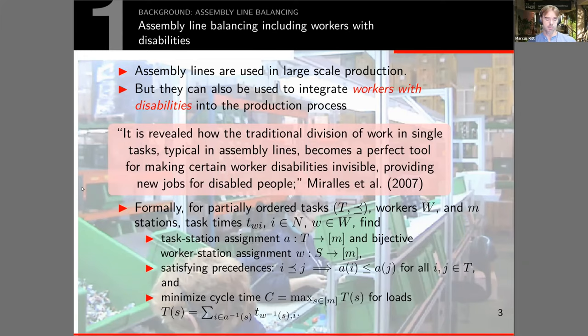There may be an order the task has to be executed given by the partial order, and we want also to assign all the workers to the stations. This assignment is the objective, and then we want to minimize the cycle time or accurately maximize the efficiency. Cycle time is just the maximum over the station loads, which are the times each station takes to execute their tasks.